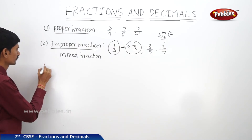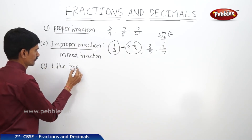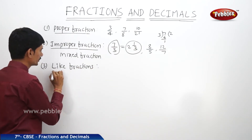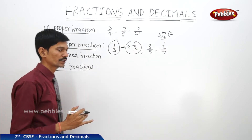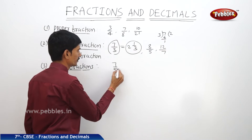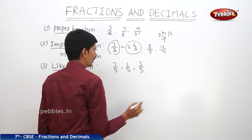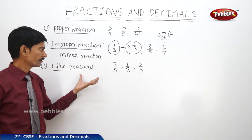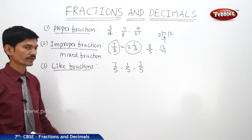Like fractions means the fractions whose denominators are equal. For example, 7/5, 1/5, and 3/5 — in all these fractions the denominators are equal. The fractions whose denominators are equal are known as like fractions.